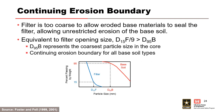For the continuing erosion condition, the filter is too coarse to allow eroded base materials to seal the filter, allowing unrestricted erosion of the base soil. Thus, this condition and the no erosion condition are the bounds for filter performance. The effective pore diameter of the filter — i.e., the maximum diameter of pores that will allow soil particles to pass — is equal to about the D15 of the filter divided by 9. The D95 of the base is compared against this opening size for the continuing erosion boundary.